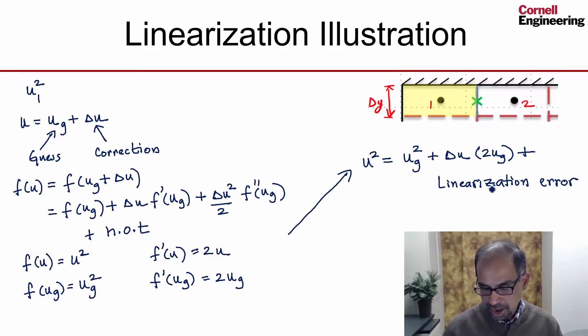Now this error becomes small as my guess tends towards the true solution, and the correction becomes smaller and smaller. So I have to iterate to drive my guess to the true solution so that the correction becomes negligible. And that's where the iterative process comes in.